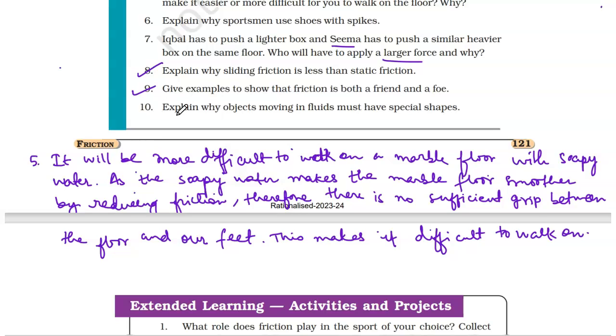Question number ten: explain why objects moving in fluids must have special shapes. See, we have understood that friction exists between two surfaces in contact. Now, when any object is moving in fluid, fluid also exerts friction. Fluid friction is also known as drag. So in order to overcome the fluid friction, or in order to overcome the drag, to minimize the fluid friction, the objects must have a minimal surface.